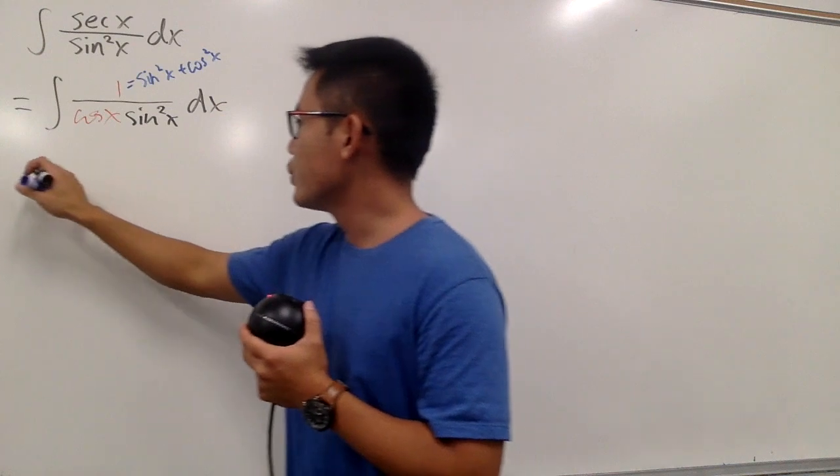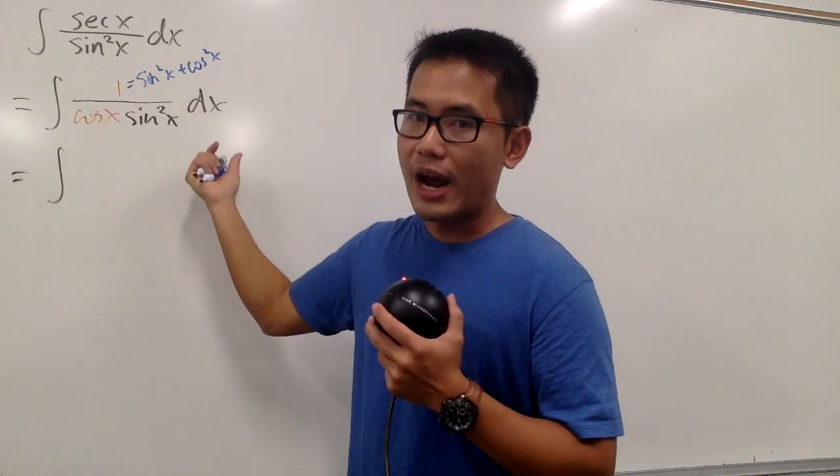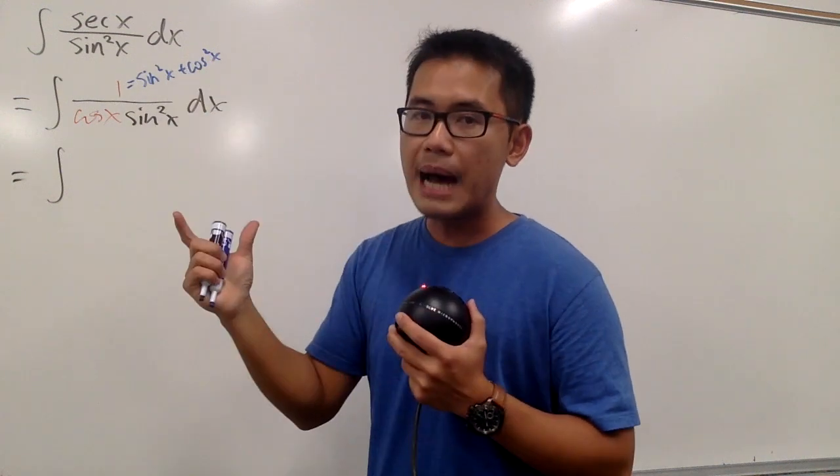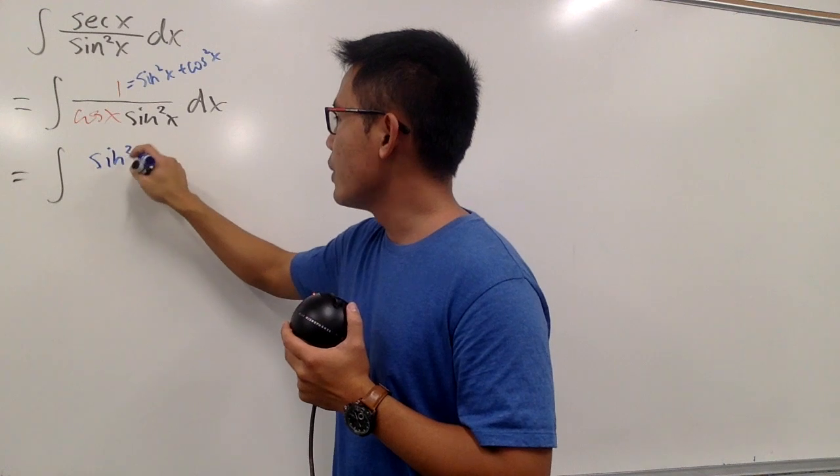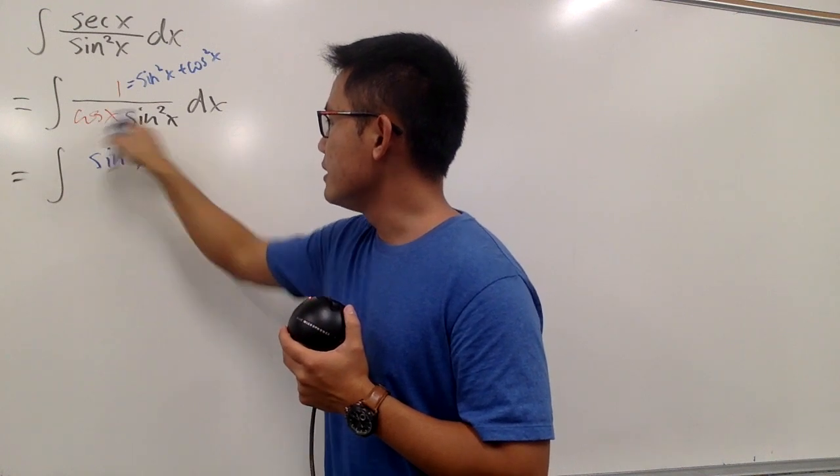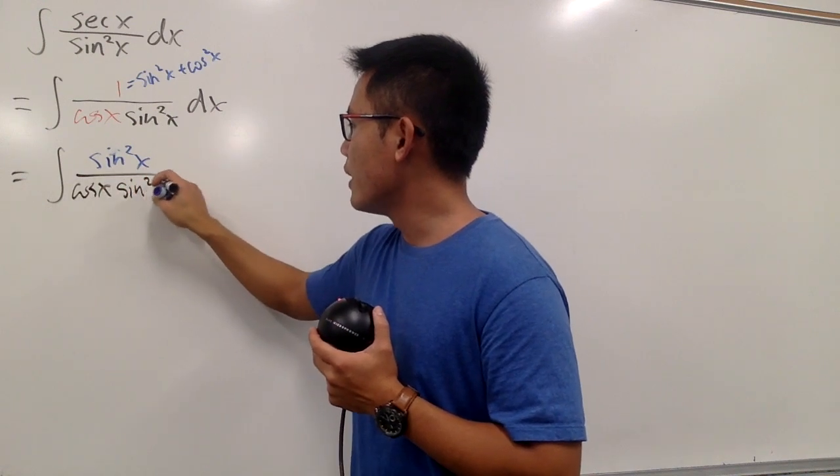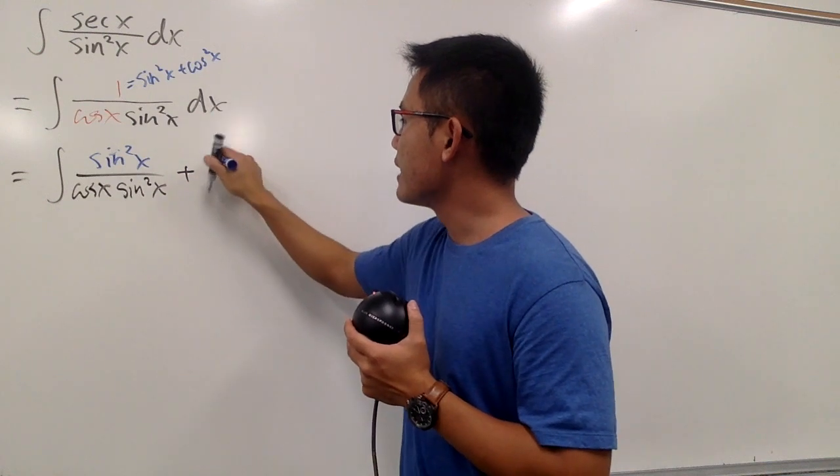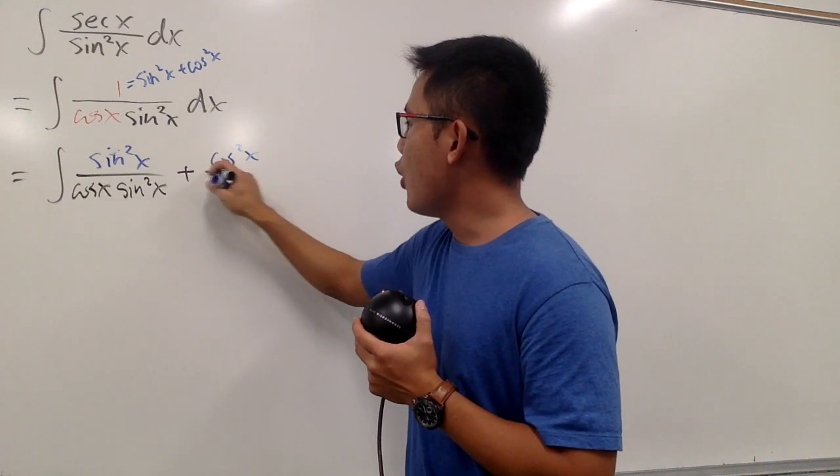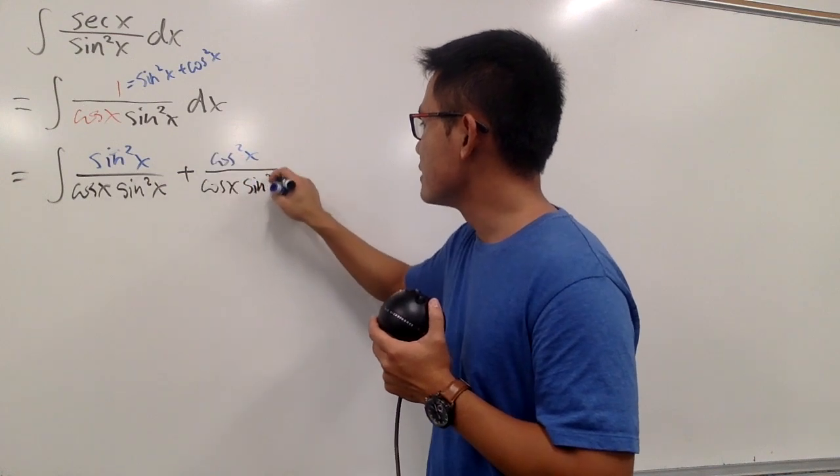And now, let's see, what do we have? This is going to be the integral. And I'm just going to split the fraction because I have two terms on the top, right? Let me write down this first. This is sine squared x over the denominator, which is this, cosine x times sine squared x.